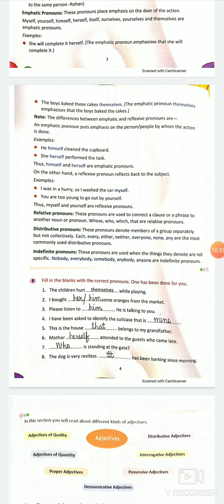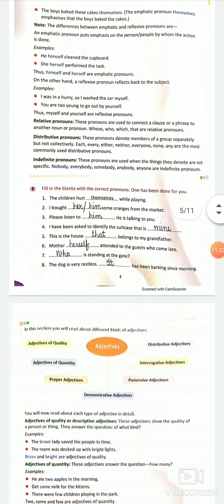Coming to indefinite pronouns where we are not clear with the person or noun. Nobody, somebody, everybody, anybody, anyone are the indefinite pronouns. This is a quick recapitulation of pronouns. We have this B part related to the pronouns exercise.